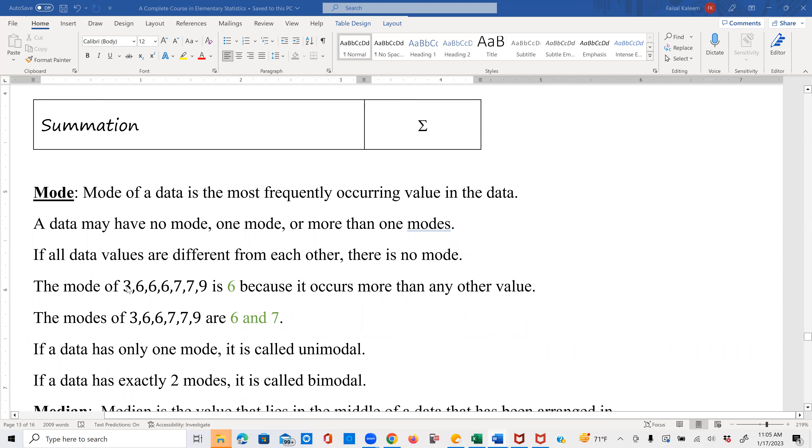The mode of this list, 3, 6, 6, 6, 7, 7, 9, is 6, because 6 occurs most frequently. It occurs three times. Even though 7 occurs more than once, just because something occurs more than once doesn't make it a mode. It has to occur at least as many times as the maximum thing. And 6 is the one that occurs three times, and nothing else occurs three times. So 6 is the only mode here.